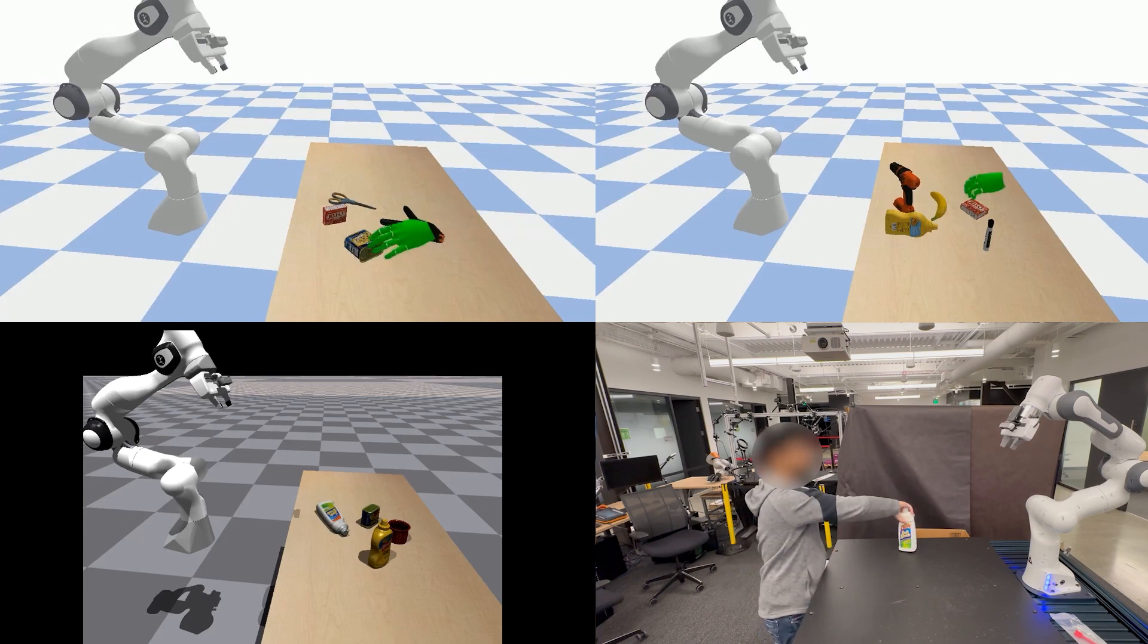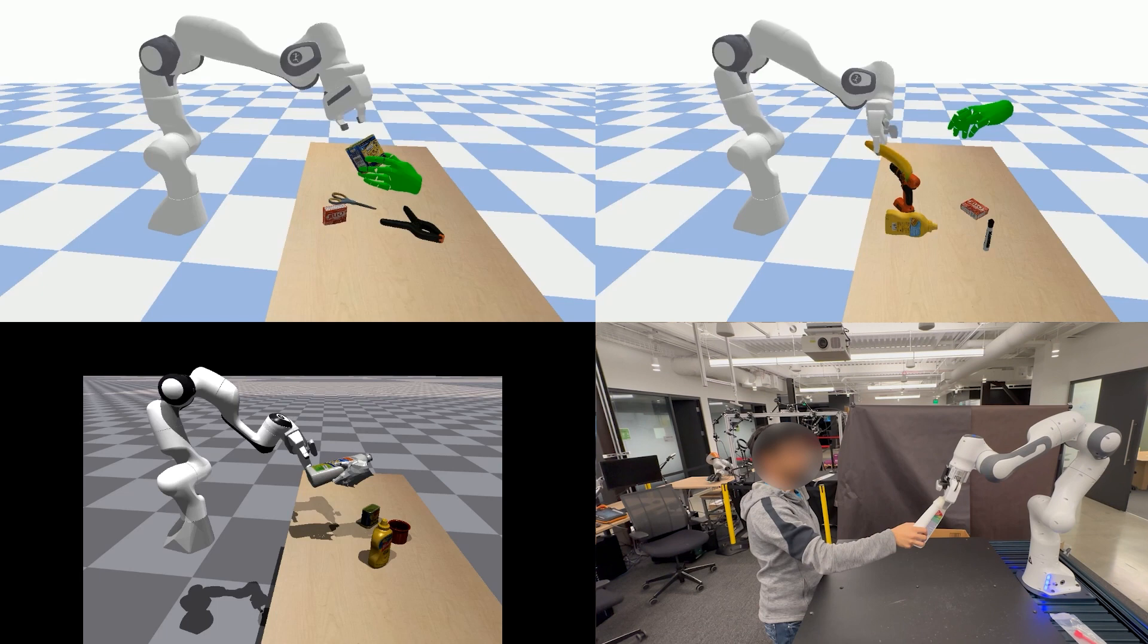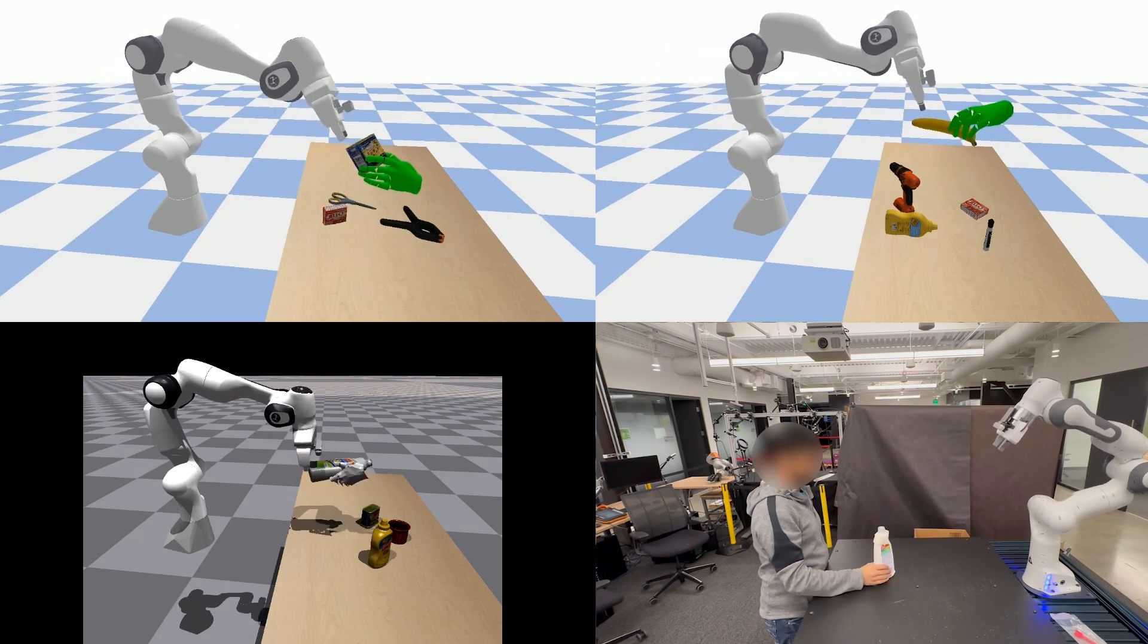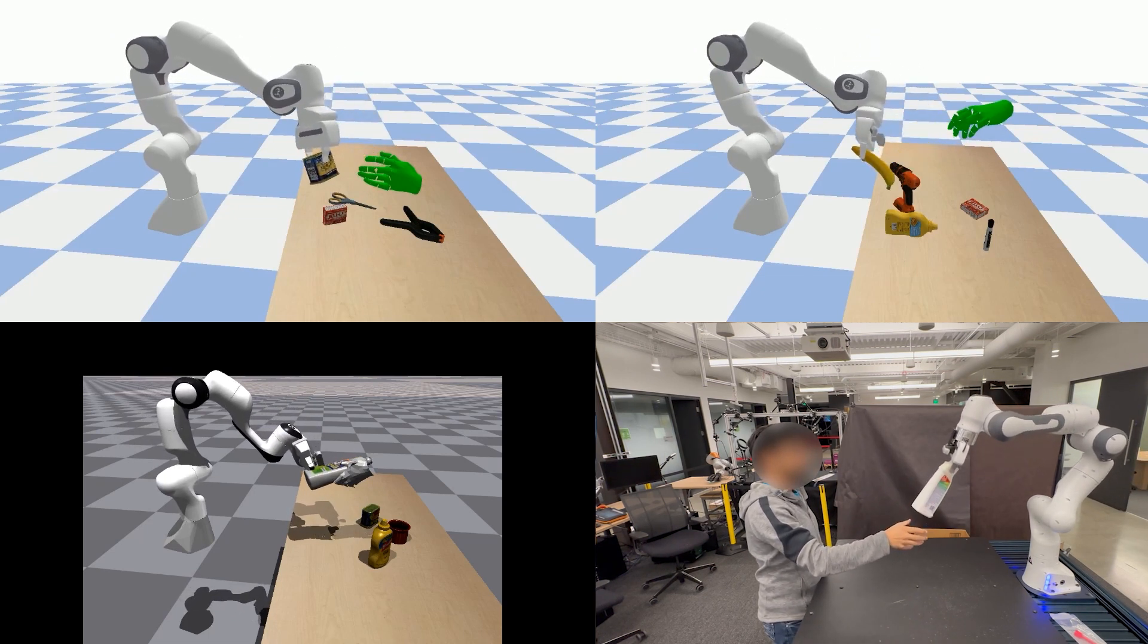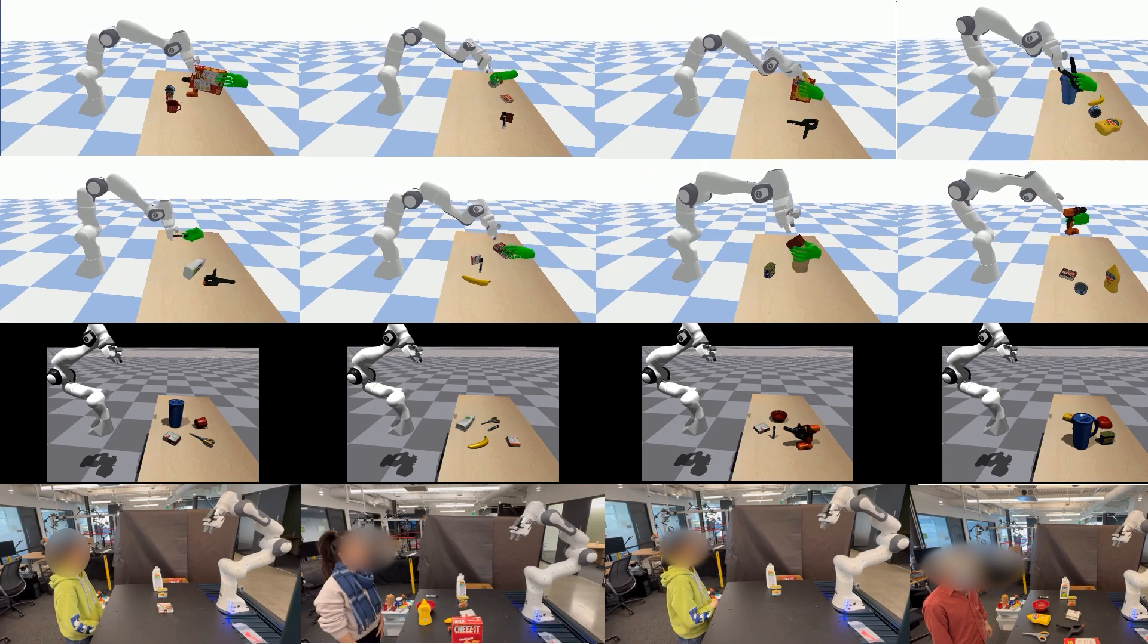In summary, we introduce the first framework that can be used to train human-to-robot handovers from point clouds. We introduce a two-stage teacher-student training procedure that can be used to train policies with a moving human in the loop. We demonstrate that our method generalizes to unseen motions.